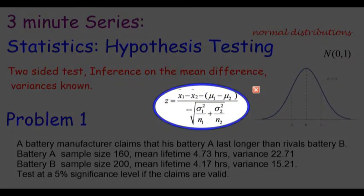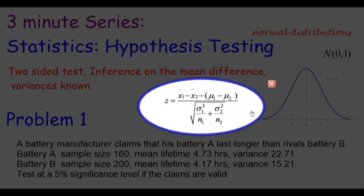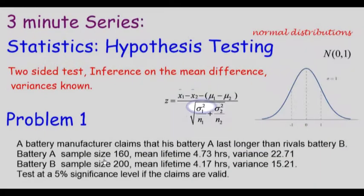You can see here it's the sample means difference minus the population means difference, all over the variances. The variances are from the first population and the sample size n₁, and the second variance from sample two over sample two's size n₂.